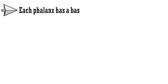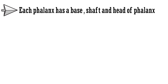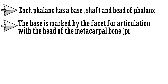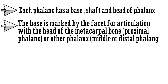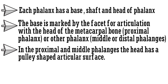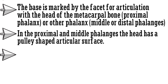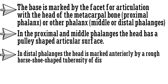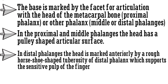Each phalanx has a base, shaft, and head. The base is marked by a facet for articulation with the head of the metacarpal bone or other phalanx. In the proximal and middle phalanges, the head has a pulley-shaped articular surface. In the distal phalanges, the head is marked anteriorly by a rough horseshoe-shaped tuberosity, which supports the sensitive pulp of the fingertip.